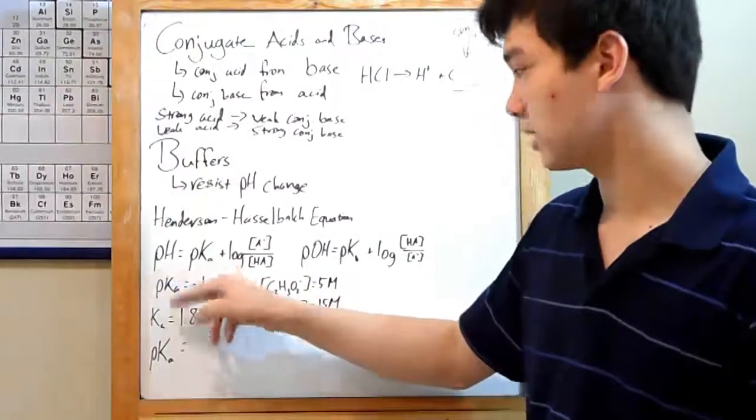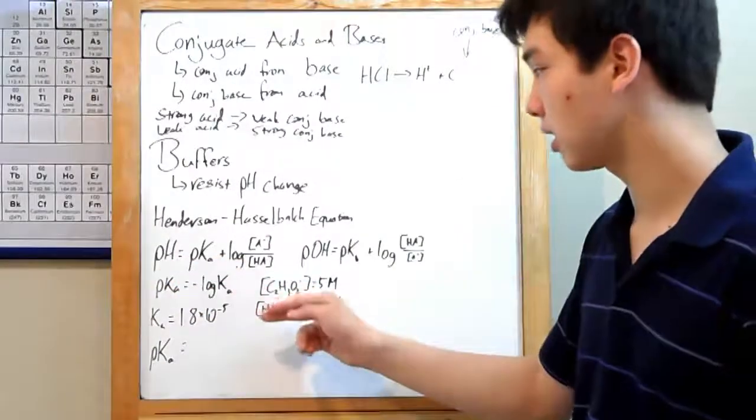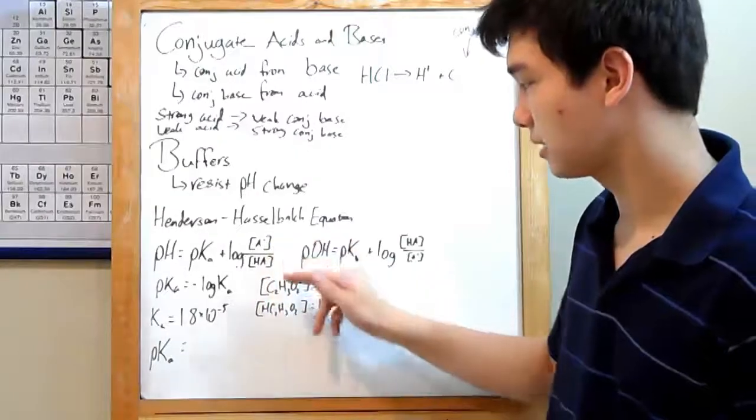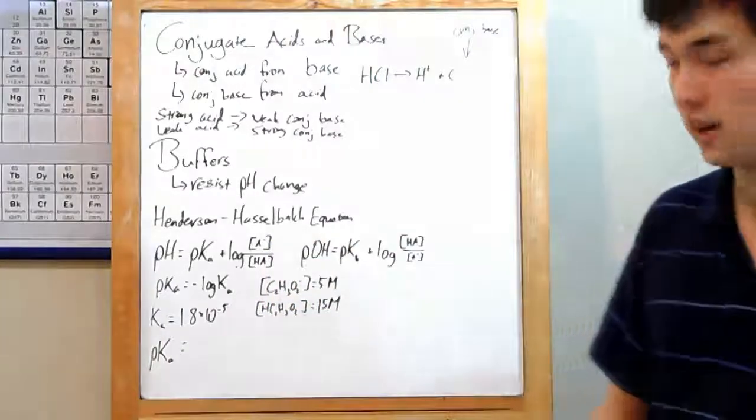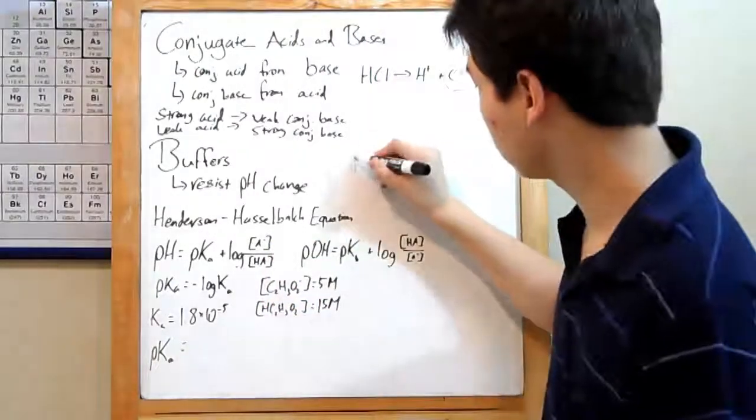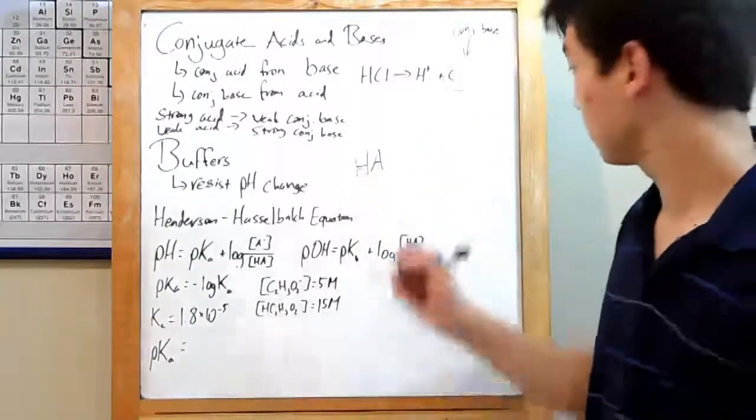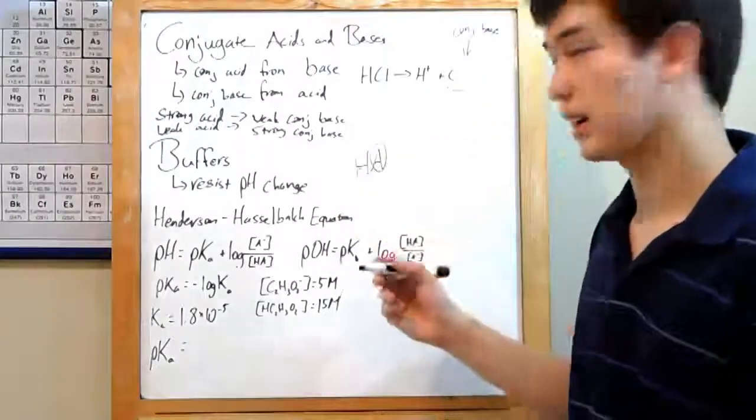That's pH equivalent to pKa plus the log of the concentration of your A minus over the concentration of HA. HA is just your generic form for any acid. That A represents your negative ion.